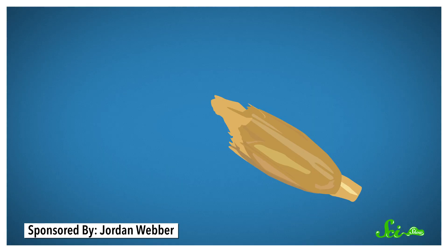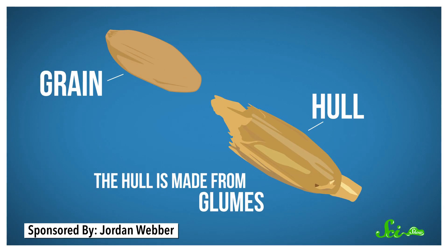Hulled wheats are the ancestors of modern wheats, but there's at least one big difference. The grains of hulled wheats are encased in a hard hull. The hull is made from glooms, a tough chaff that protects the grains. It's almost like the shell of a nut, but it's also really hard to get off.